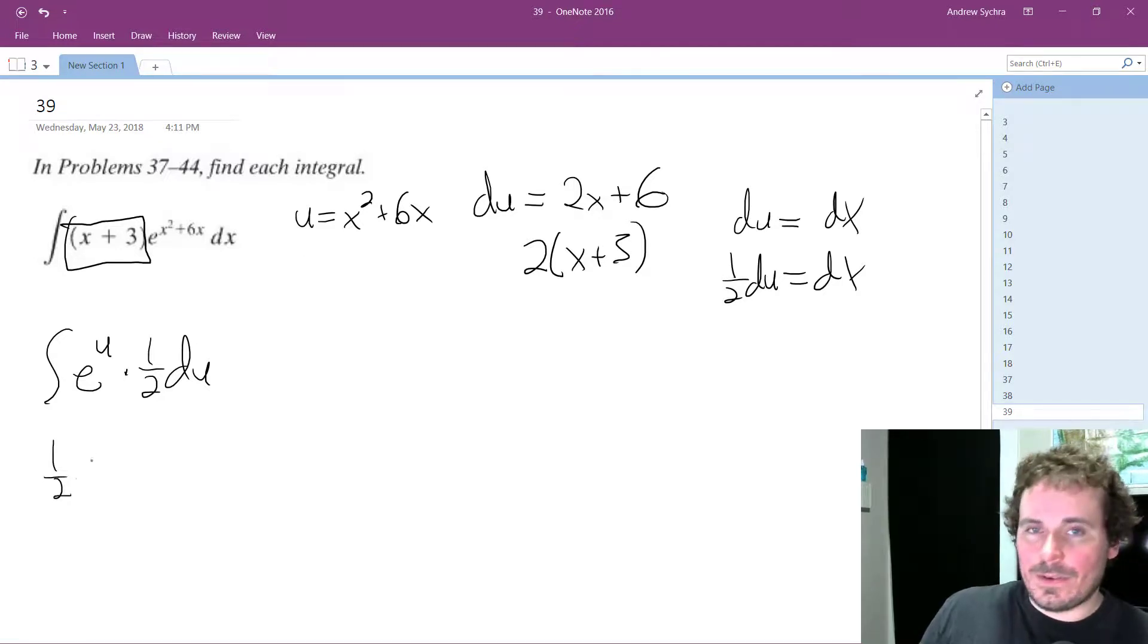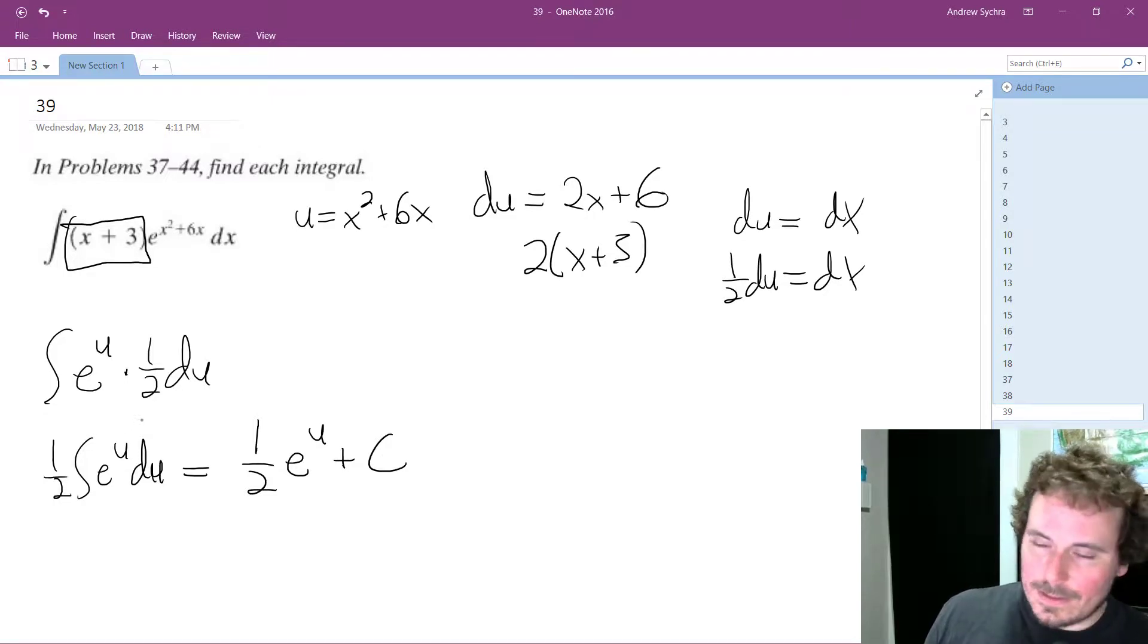Alright, so we integrate this, put the coefficient out in front, e raised to the u du, and what we end up with is one half e raised to the u plus c, because the integral of e to the u or the derivative of e to the u is itself.